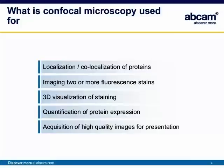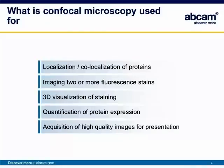So what would you need to be doing confocal microscopy for? Probably most of you may have some idea already because you've been asked to do this in your research. Confocal microscopy has a range of applications — this is just a small summary, but there are many more ways to do a confocal experiment. You can use it for localizing or co-localizing different proteins and seeing how they interact together. It can also be used for imaging two, three, or four fluorescent stains and seeing which parts of the epitopes of proteins are interacting.